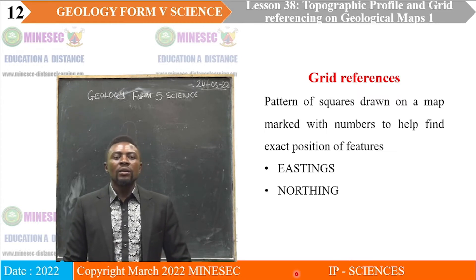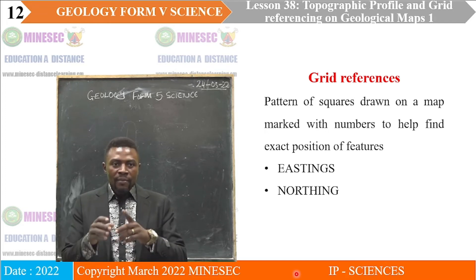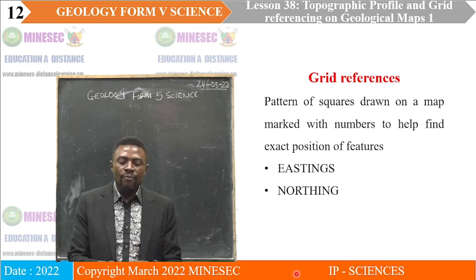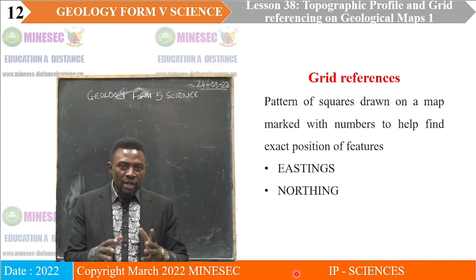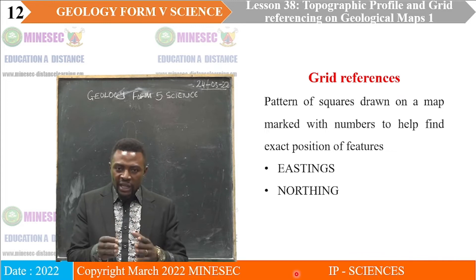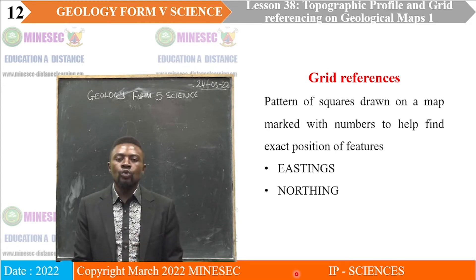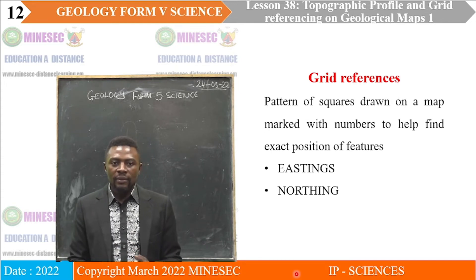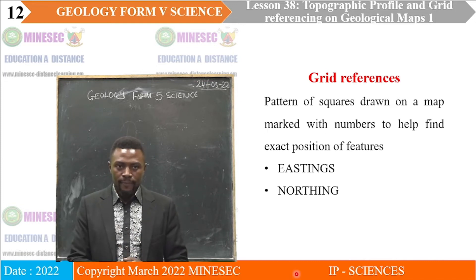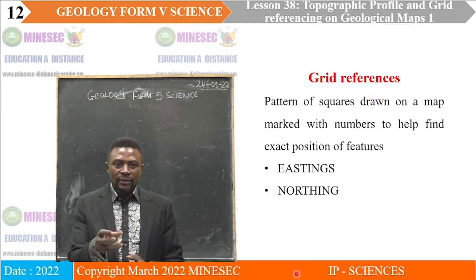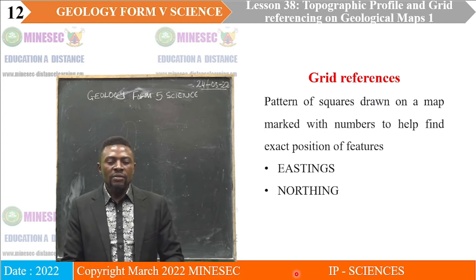We start with grid references. On maps, we have patterns of squares that are marked with numbers that help us find the exact position of features. Every portion of the earth is present within a particular pattern or square. Those squares we call grid squares, and the numbers found on the lines that form those squares are what we call grid references.